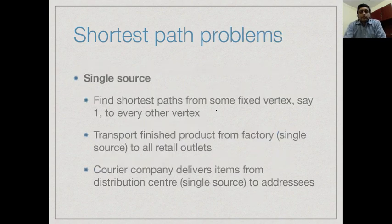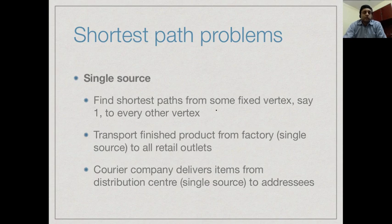We can ask two types of questions regarding shortest paths. The first is the single-source shortest path problem: given a designated start vertex, find the shortest distance to every other vertex. This has very natural applications — for example, a manufacturer distributing items from a single factory to retail outlets across the country, or a courier company computing the shortest path from a central distribution office to all delivery addresses in a city.